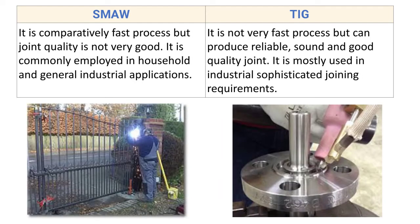Next point: SMAW is a completely fast process but joint quality is not very good. It is commonly employed in household and general industrial applications. The process is fast, but since it uses a consumable electrode, the joint quality is not as high, making it most suitable for general applications.